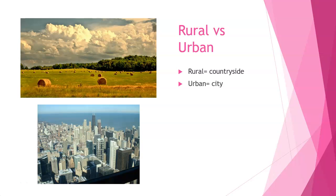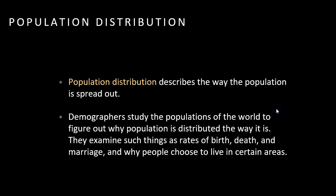A few more terms we need to remember: the difference between rural and urban. Rural means countryside — that picture up here is a rural area. Urban means city, so there's your city.